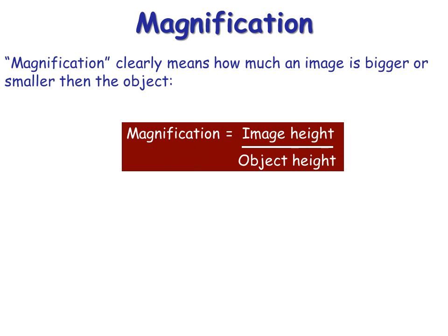The magnification is how much times bigger the image is compared to the object. Or if it's less than one, it means the image is actually smaller than the object. And it can be worked out by this equation. So you simply measure the image height divided by the object height. So if the image was twice as big as the object, then the magnification would be two, meaning two times bigger.